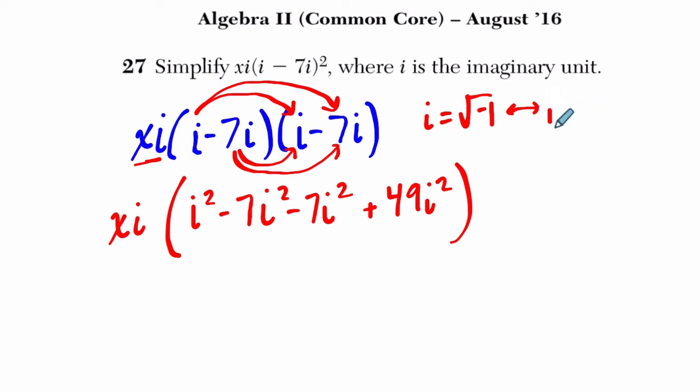Wonderful property of imaginary numbers that you can square an imaginary number and get a negative result. So here, that just changes this whole thing. The way I'm going to simplify is I'm going to first combine things.